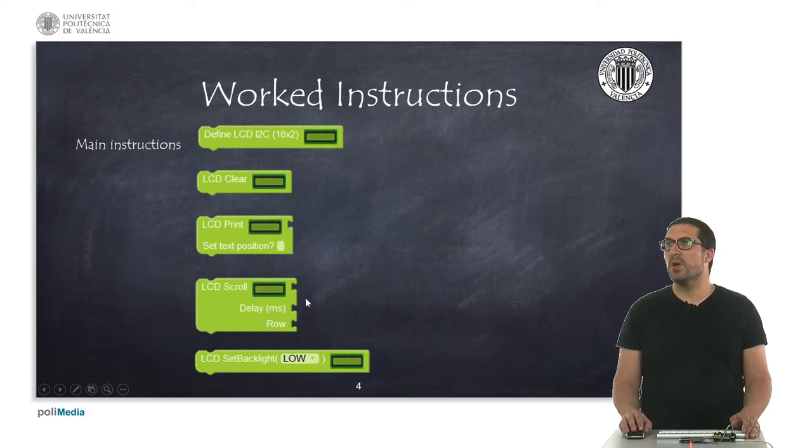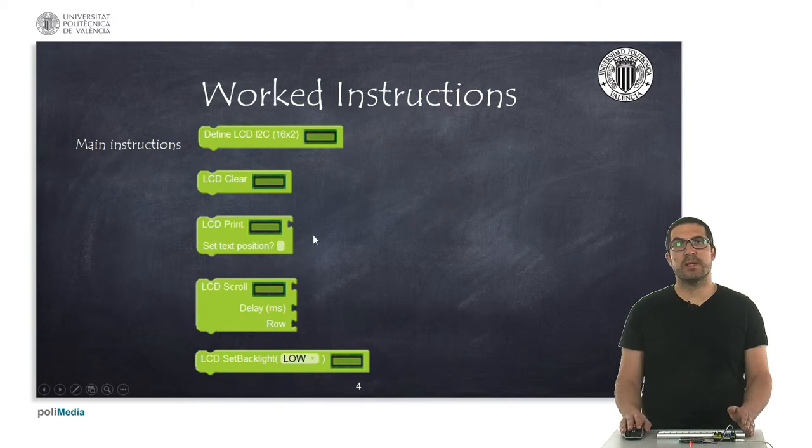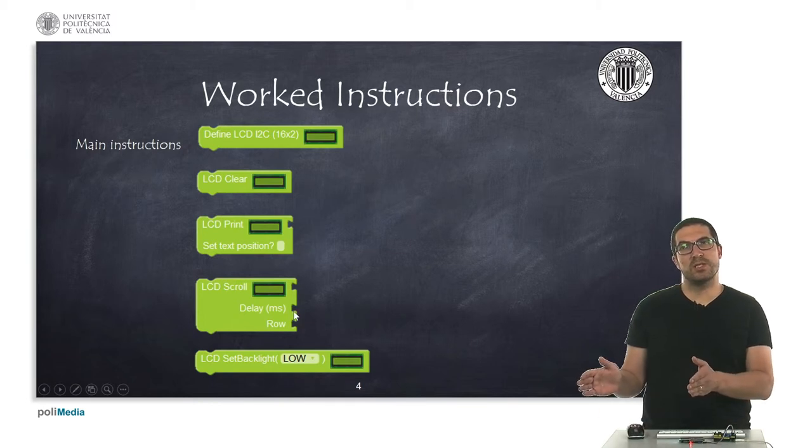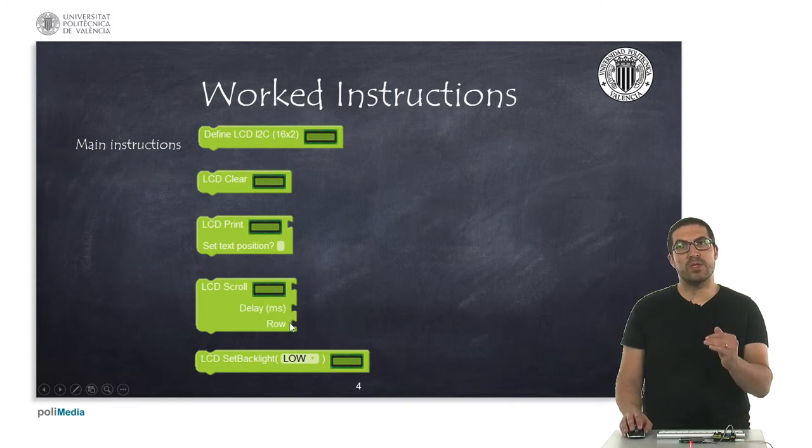Then we have this instruction that will basically scroll a text. If it's too long, the previous instruction the text won't fit, but with this instruction we scroll it so it shifts from the right to the left. We can specify the time for every shift and in which row we want to scroll this text.